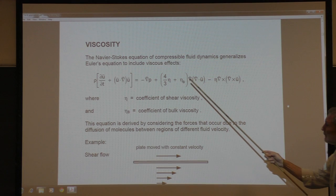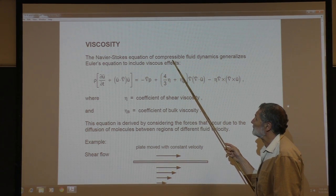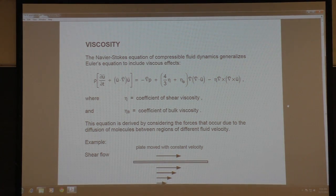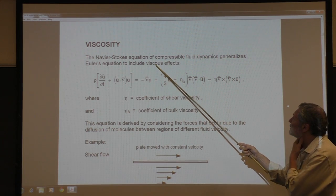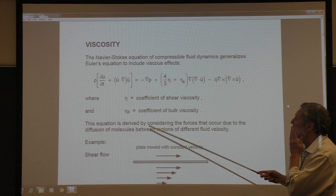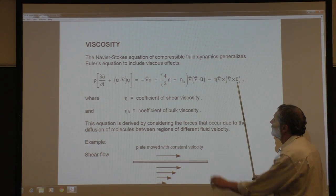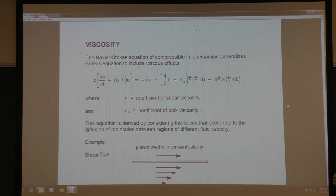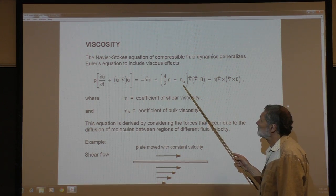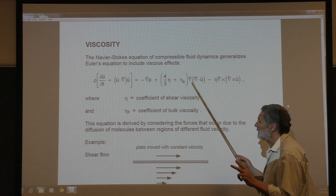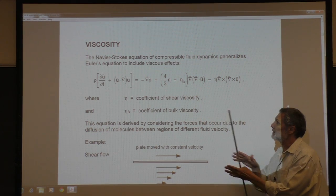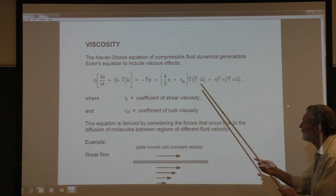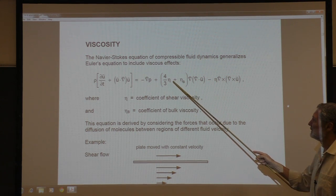Many of you are probably familiar with the Navier-Stokes equation for incompressible flow, but that's no good for us here — almost always in acoustics — because acoustics involves compressions and expansions. Here's the full Navier-Stokes equation for compressible flow. There are two additional terms here — these are the viscosity terms. These coefficients are the shear viscosity coefficients. There are two types: there's a shear coefficient of viscosity, and there's a bulk volume-change coefficient of viscosity. We'll talk more next week about the distinction between these two.